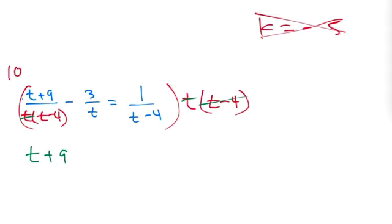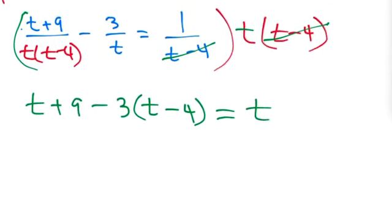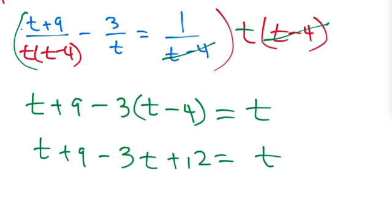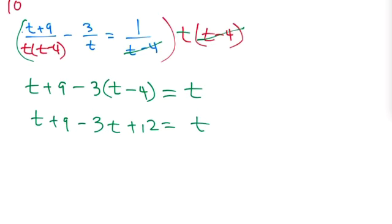Right, and multiply the second one, this t cancels out, I have negative 3 times t minus 4 there. Equal to, this last one here, I have this cancel out, I have 1 times t is just t. And then you solve it. And you get t plus 9 minus 3t plus 12 equals to t. Equals to 0 by minusing a t.